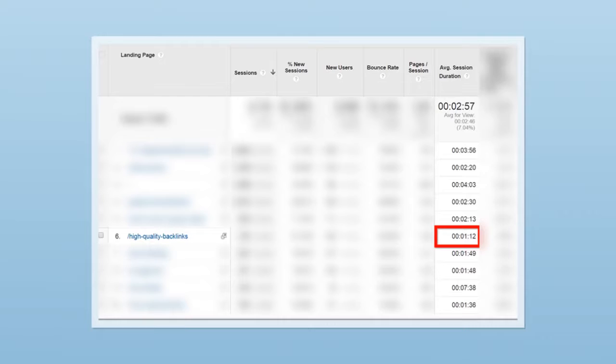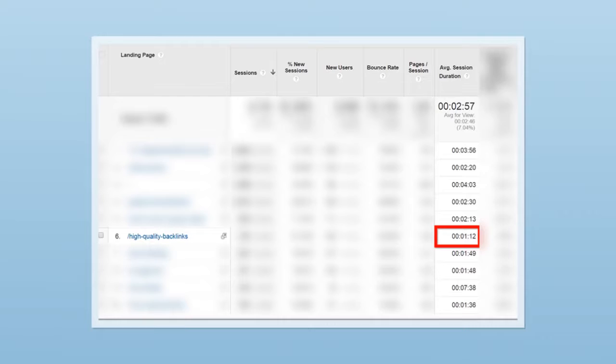Most people that came to my site from Google spent nearly 3 minutes on my site. But for this page, the average is only 1 minute and 12 seconds. Less than half of my site-wide average. So what's going on here?